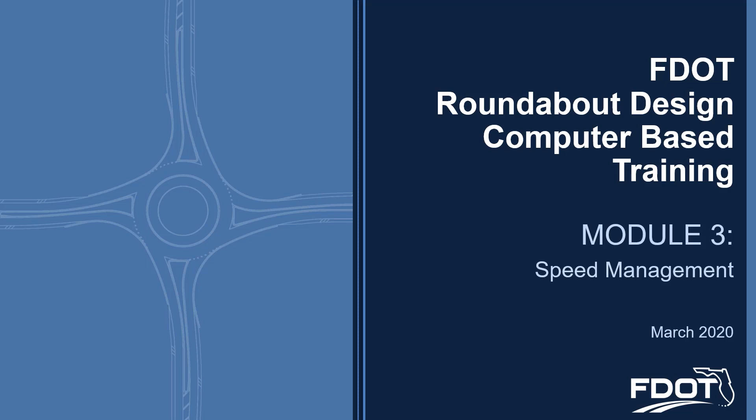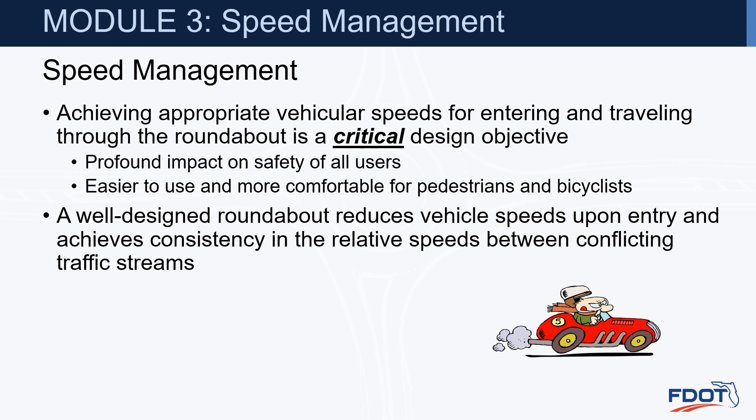Module 3: Speed Management. Achieving appropriate vehicular speeds for entering and traveling through the roundabout is a critical design objective. It has a profound impact on safety of all users and makes it easier to use and more comfortable for pedestrians and bicyclists. A well-designed roundabout reduces vehicle speeds upon entry and achieves consistency in the relative speeds between conflicting traffic streams.